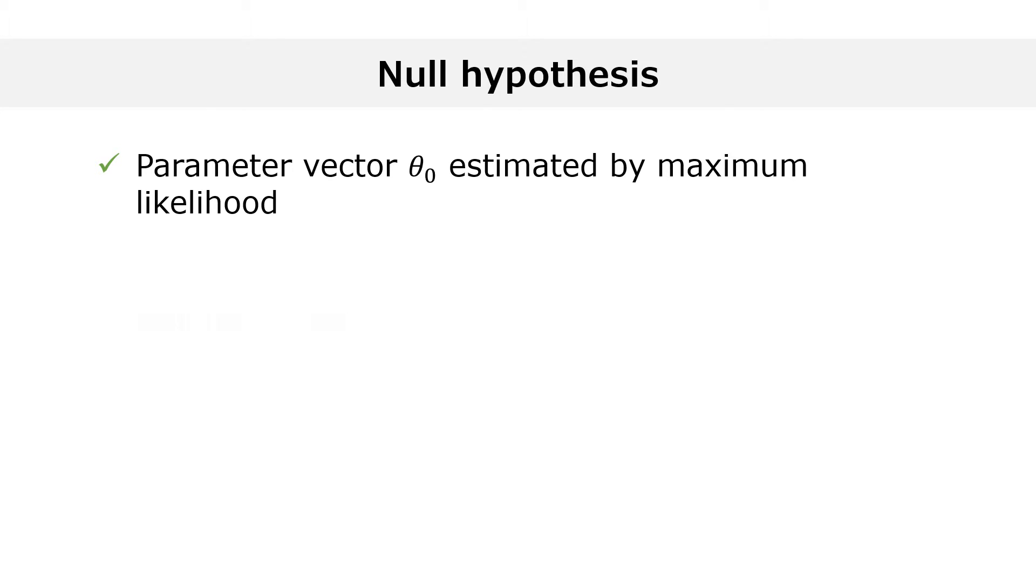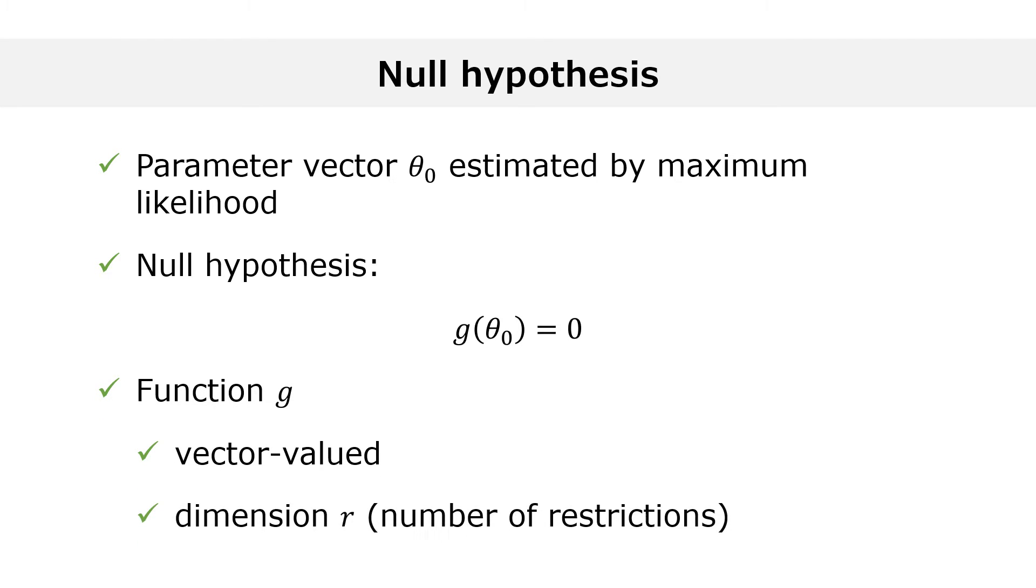we can test hypotheses of the form g of theta zero equals zero. g is a vector-valued function whose dimension will be denoted by r. In other words, there are r constraints, or restrictions, on the vector of parameters, each described by an equation.